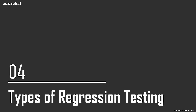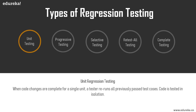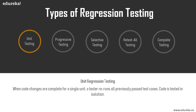Regression testing is often done through several phases of testing, which is why there are several types. First is unit testing — immediately after coding changes are made for a single unit, the developer reruns all previously passed unit tests. In test-driven development (TDD) and continuous development environments, automated unit tests are built into the code, making unit regression testing very efficient compared to other types.